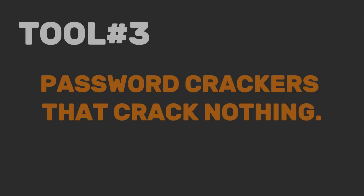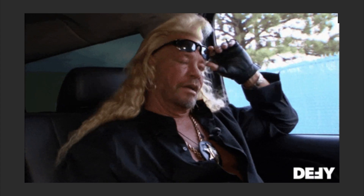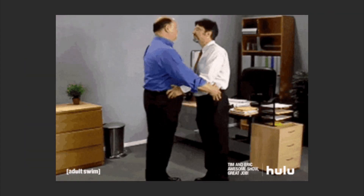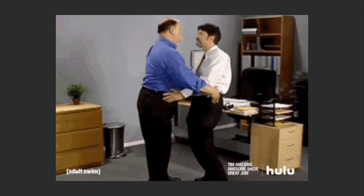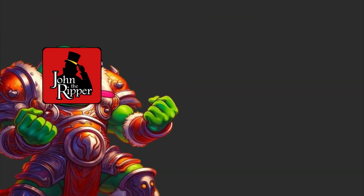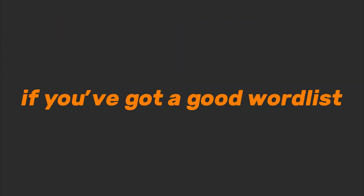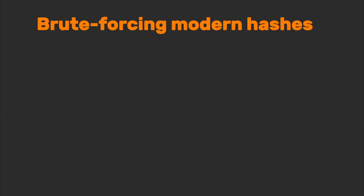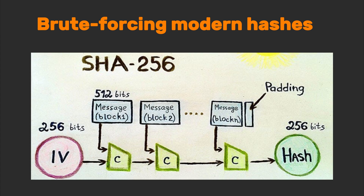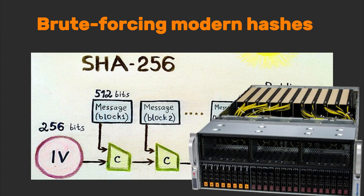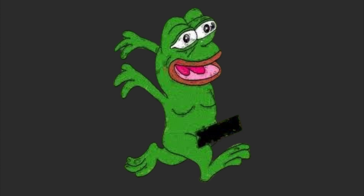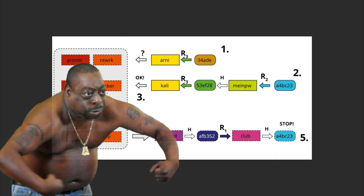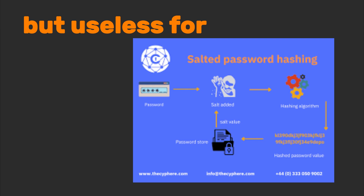Tool number three: password crackers that crack nothing. Password crackers — the digital equivalent of shaking a locked briefcase and hoping it opens. Tools like John the Ripper are powerful if you've got a good word list, but if your dictionary is just 'password123' and 'I love you', you're gonna have a bad time. Brute forcing modern hashes like SHA-256 without a GPU cluster? Enjoy your retirement. Using rainbow tables? Cool for MD5 in 2005, but useless for salted hashes in 2025.